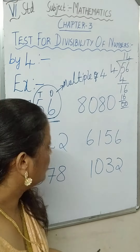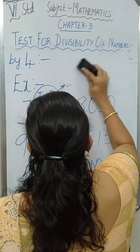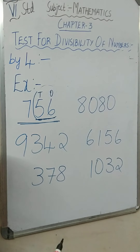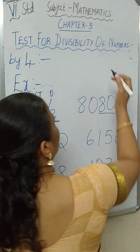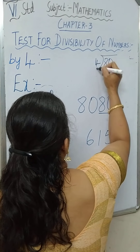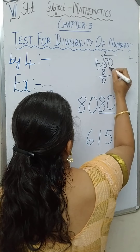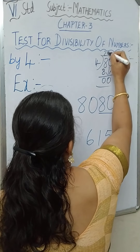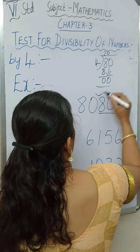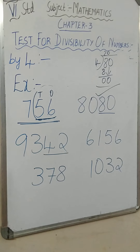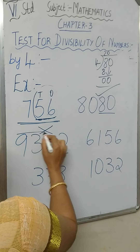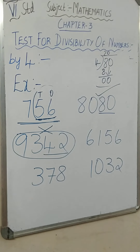Same way, for 8080, the last two digits are 80. Is 80 a multiple of 4? Divide 80 by 4: 4 twos are 8, bring down 0, so yes it is divisible by 4. Now look at 9342 — the last two numbers are 42. Is 42 a multiple of 4? No, it is not a multiple of 4. So 9,342 is not divisible by 4.